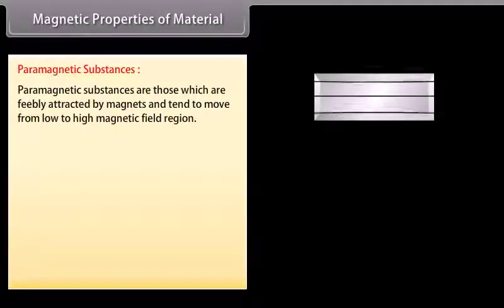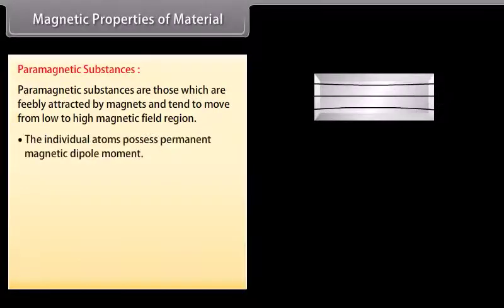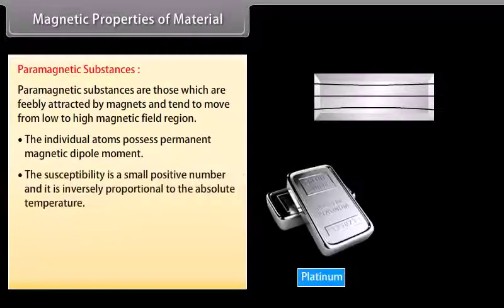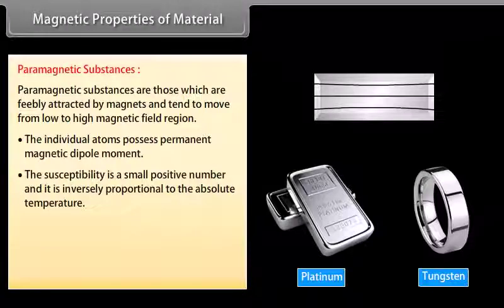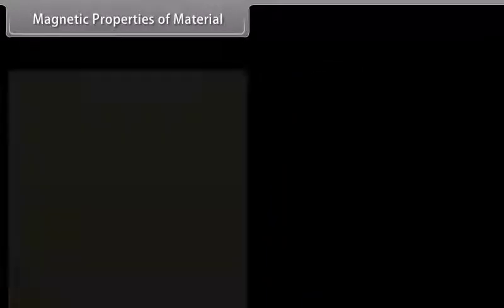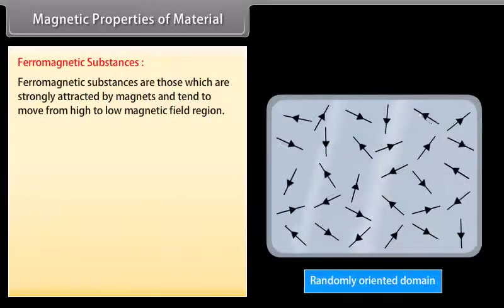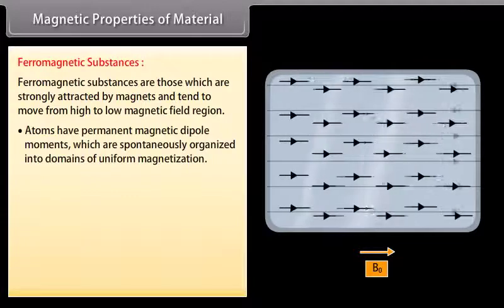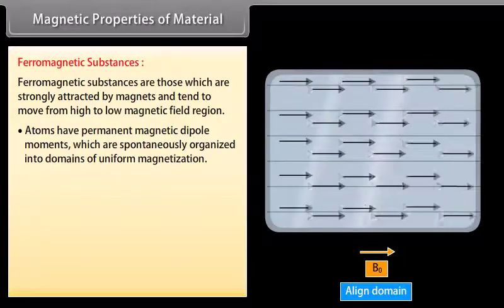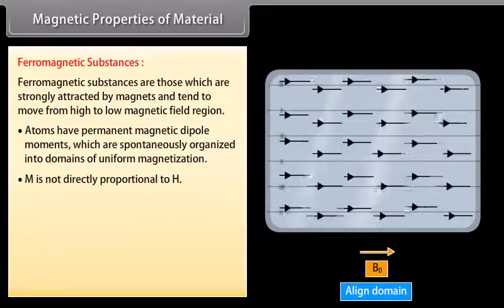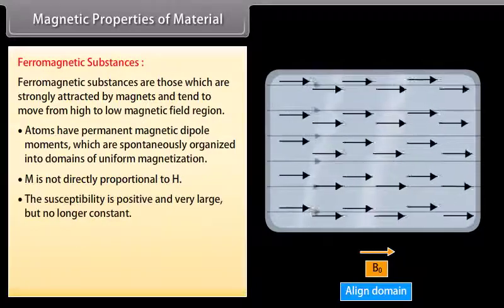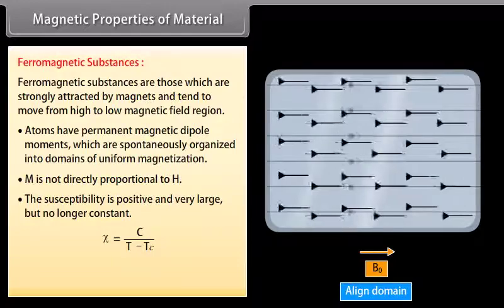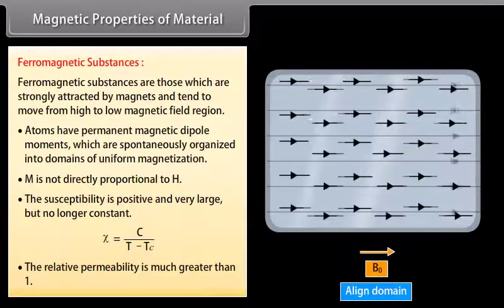Paramagnetic substances are those which are feebly attracted by magnets and tend to move from low to high magnetic field regions. The individual atoms possess permanent magnetic dipole moments. The susceptibility is a small positive number and is inversely proportional to the absolute temperature: chi = C/T. The relative permeability is slightly greater than 1. Ferromagnetic substances are those which are strongly attracted by magnets and tend to move from low to high magnetic field regions. Atoms have permanent magnetic dipole moments which are spontaneously organized into domains of uniform magnetization. M is not directly proportional to H. The susceptibility is given by chi = C/(T - Tc), and the relative permeability is much greater than 1.